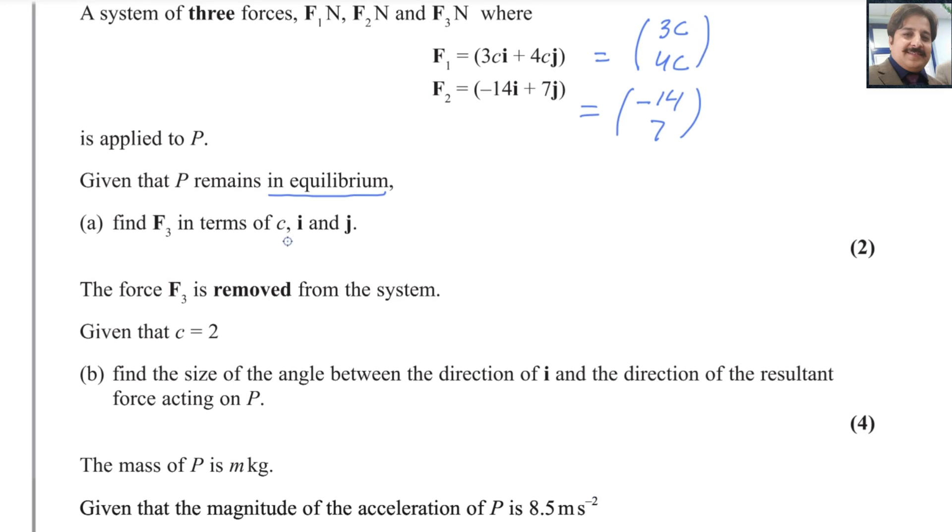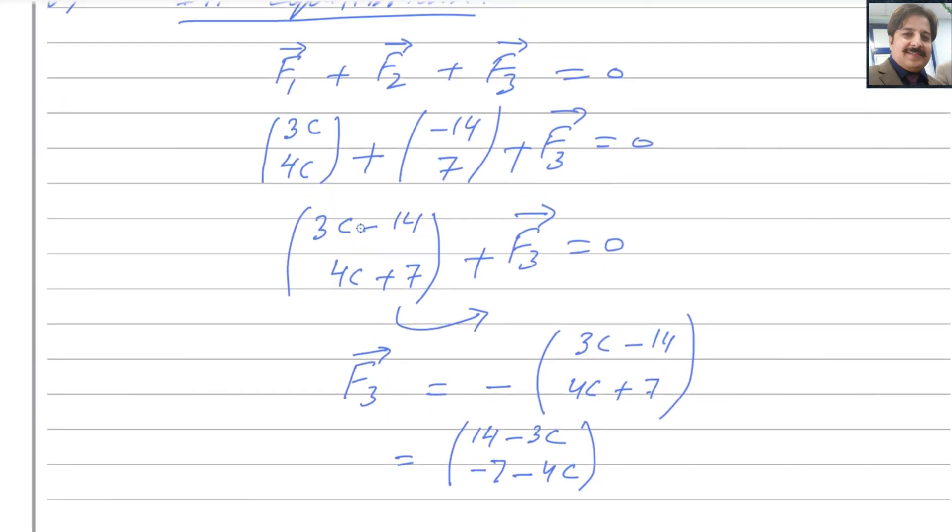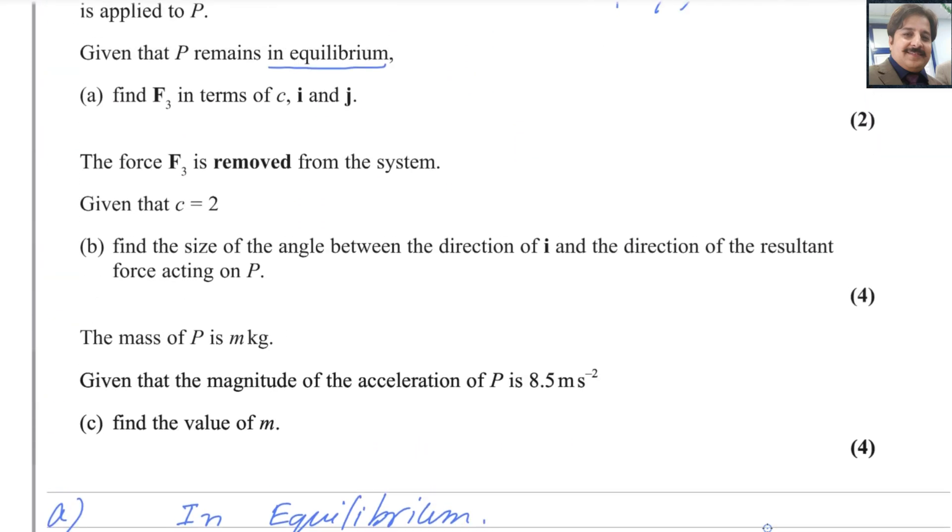Because we need our answer in terms of c, i and j, you have to write in vector form, the standard form. This is the coefficient of i: 14 minus 3c i plus minus 7 minus 4c j. So this is the answer for the first part. First part is done.